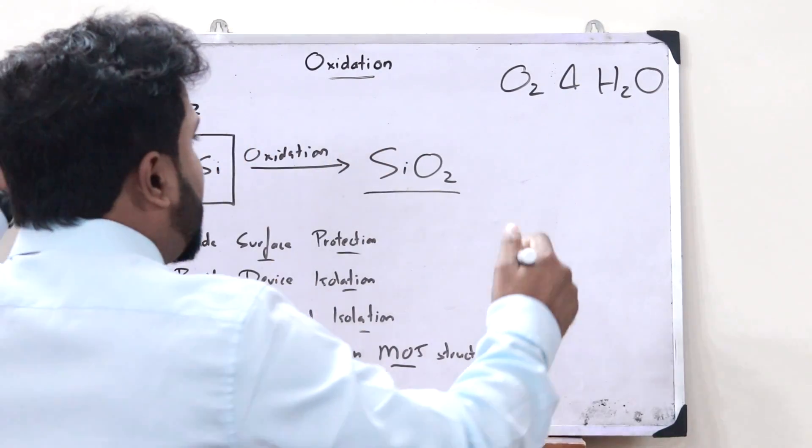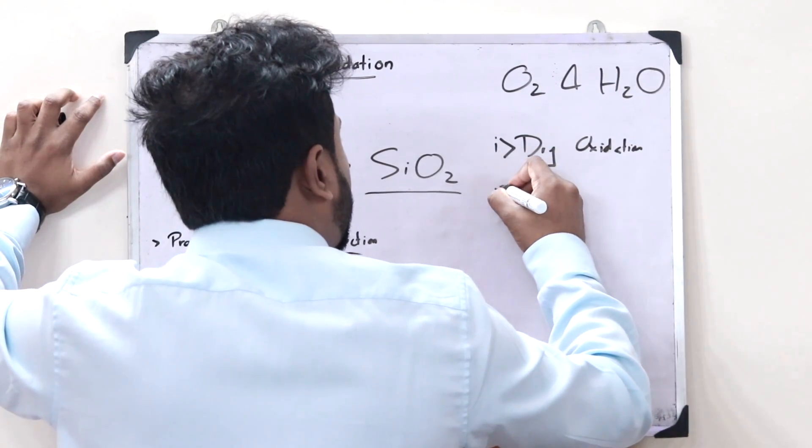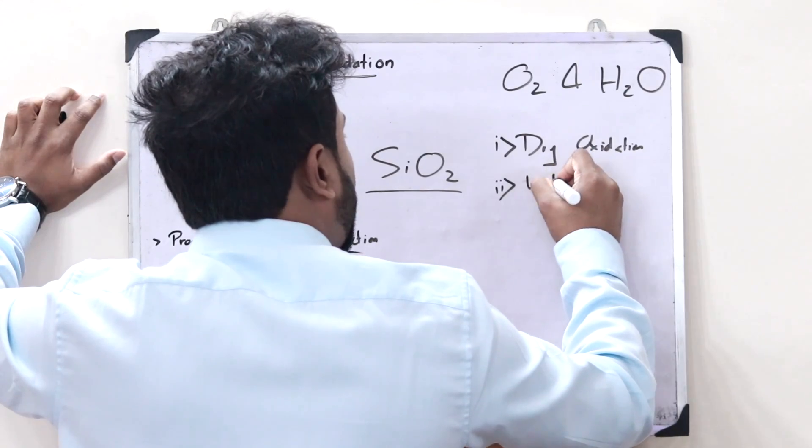There are two types of oxidation. The first one is dry oxidation, and the second one is wet oxidation.